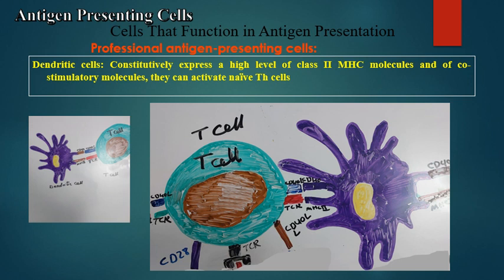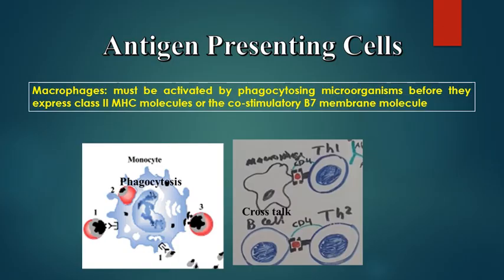Of the three professional antigen presenting cells, the dendritic cell is the most professional, as it constitutively expresses high levels of MHC class II molecules and co-stimulatory molecules. Because of this, dendritic cells can activate naive T-cells.